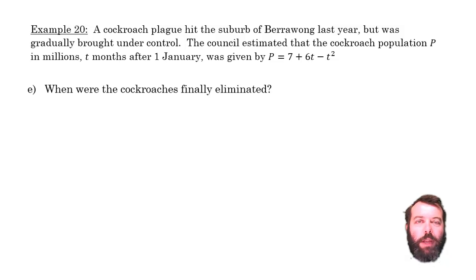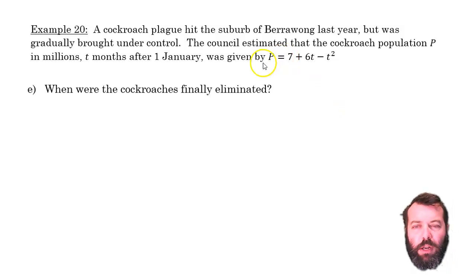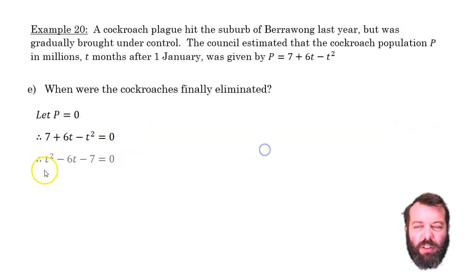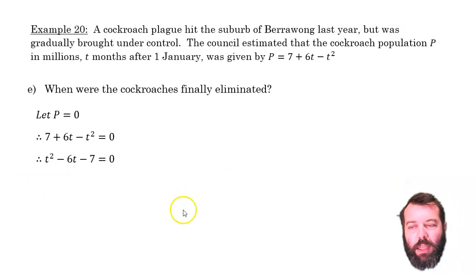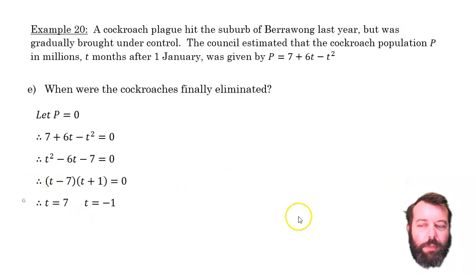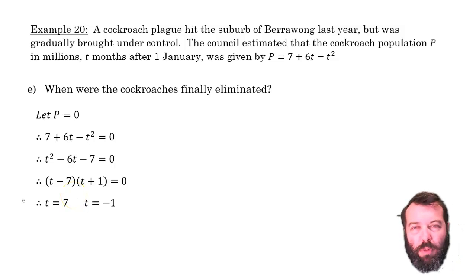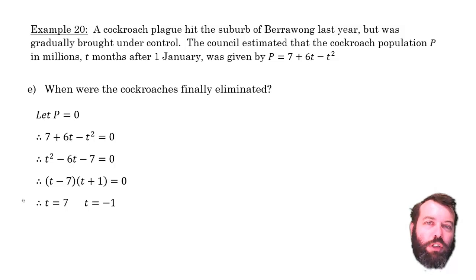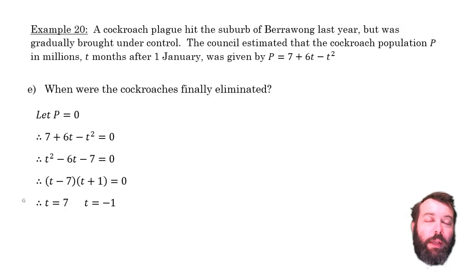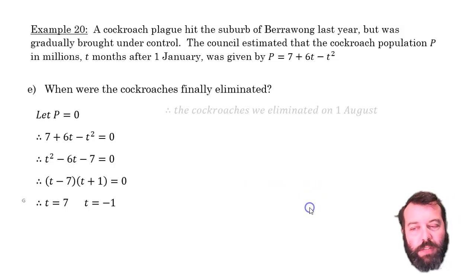When were the cockroaches finally eliminated? Elimination means population equals 0, so let P = 0: rearranging and factorising the quadratic gives t = 7 or t = −1. The negative 1 represents December the previous year, which we discard. The population started at 0, rose, then came back down at t = 7, which is the 1st of August.